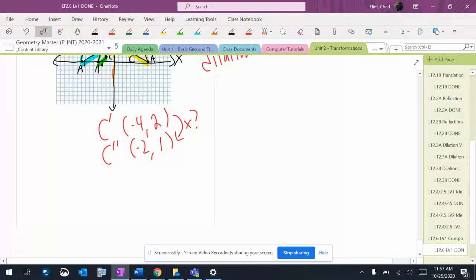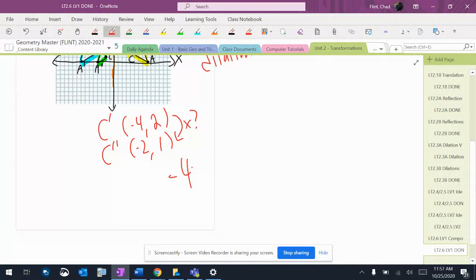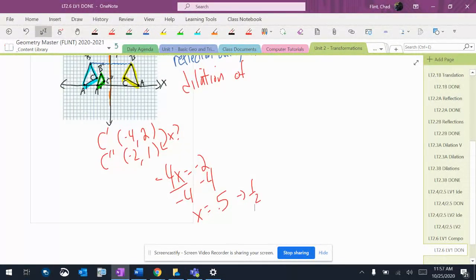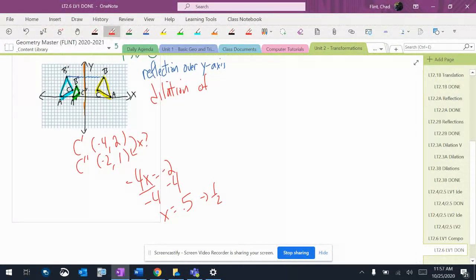If you're not sure, negative 4 times x equals negative 2. So x equals negative 4 divided by negative 2. If you don't know, you open that button and pick the fraction thing. So that's a one-half. Now we have a dilation of one-half. All right, you can use different points.